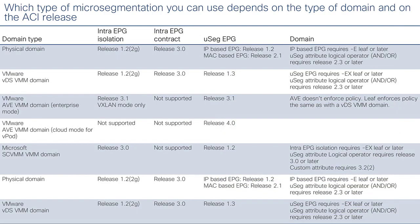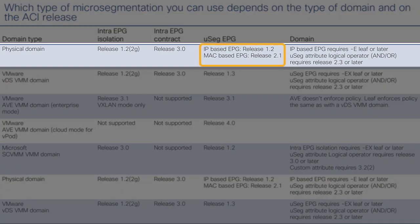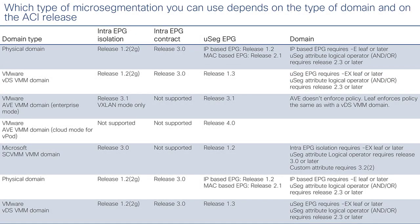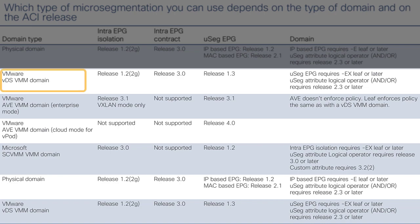Which micro-segmentation features you can use depends on the ACI release — this table shows which feature was introduced in which release. It also depends on the domain type. With a physical domain you can use IP-based or MAC-based EPGs, but VM attributes don't exist for physical hosts, so you cannot classify based on VM attributes or guest OS. For virtualized hosts on VMware or Microsoft HyperV, you have more granular options including guest OS and VM attributes.